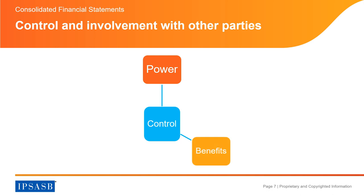Regarding benefits, an entity is exposed or has rights to variable benefits when the benefits it seeks have the potential to vary as a result of the other entity's performance. Regarding the link between power and benefits, an entity controls another entity if it not only has power and exposure to variable benefits, but also has the ability to use its power to affect the nature or amount of those benefits. The existence of congruent objectives alone is insufficient; the entity must also have the ability to direct the other entity to work with it to further its objectives.